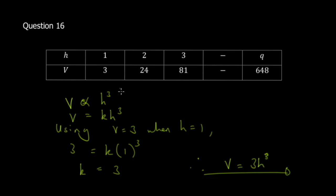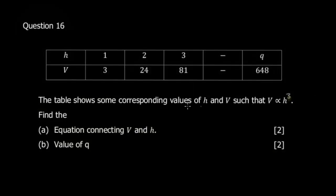When you're revising, use a different set of values from what you used originally so that it's easy to cross-check. The second part says find the value of q, so we need to find the value of q.